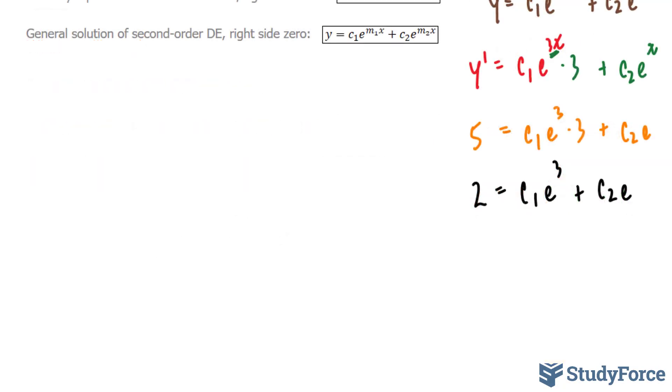Of these two unknowns, c1 and c2, I'll start by eliminating this term and I can do that by subtracting these two equations. 5 minus 2 is 3. This term minus this term is 3 minus 1 which is 2, c subscript 1, e to the power of 3. And these two terms become 0.